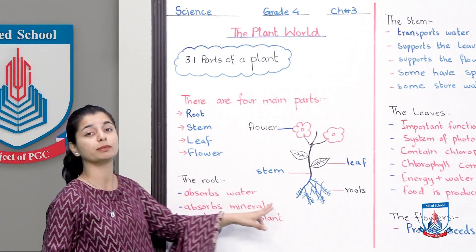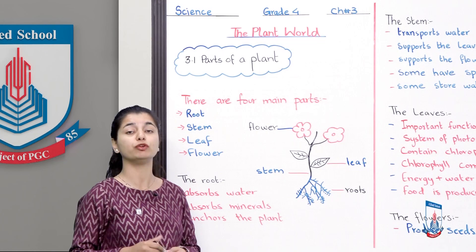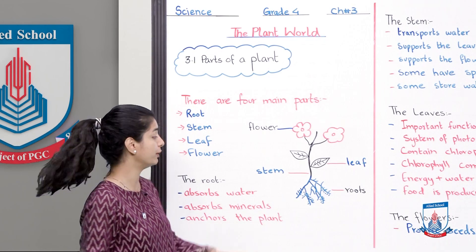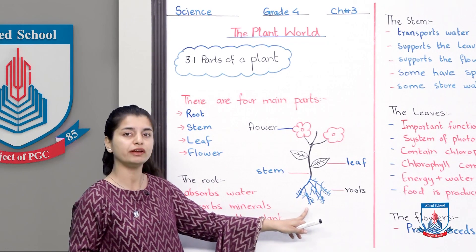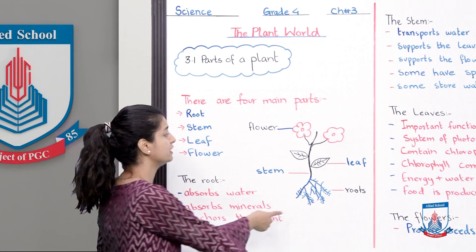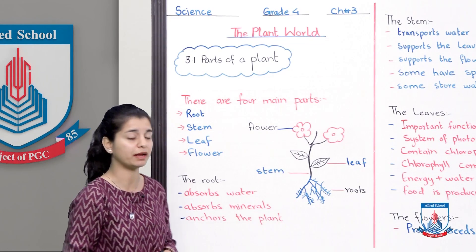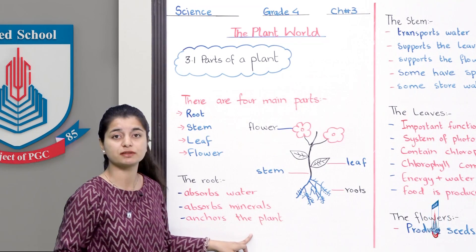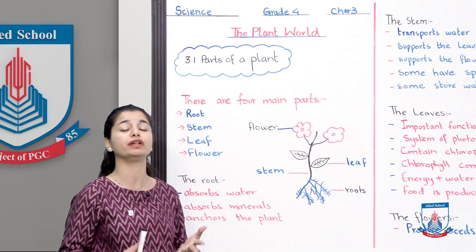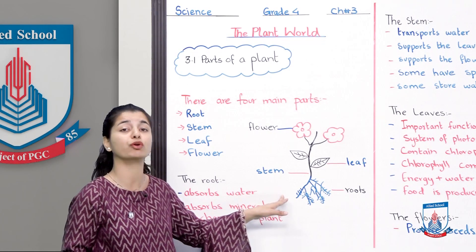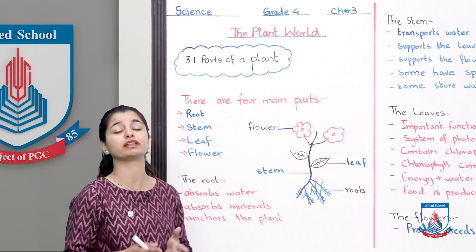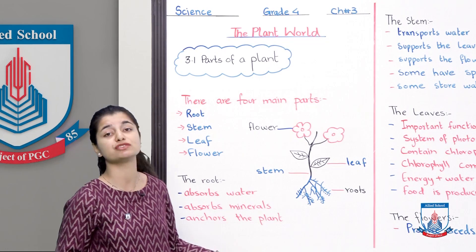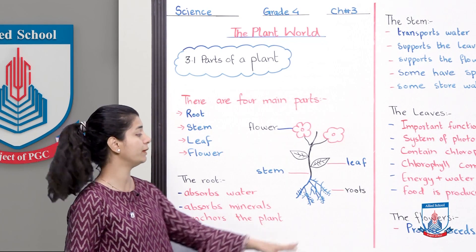The roots absorb water. Obviously, when you give the plant water, it goes into the soil, and that is absorbed by the roots. The roots absorb water from the soil and then it is transported throughout the plant. The other role of the roots is absorbing minerals. There are many minerals in the soil, and as we go further you will learn that these minerals are also important for plants to grow.